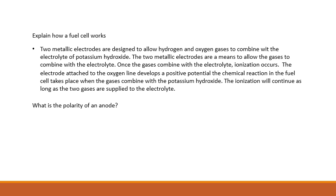What is the polarity of an anode? Positive. Of a cathode? Negative. You can remember that A comes before C, so A is positive and C is negative — anode and cathode.